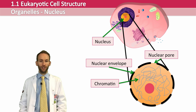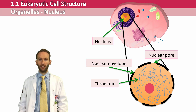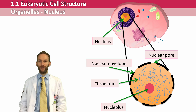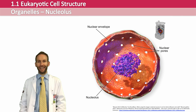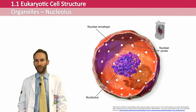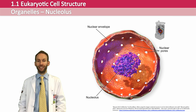The nucleus also contains something called the nucleolus — a dense, dark area within the nucleus whose function is to produce ribosomes and RNA, both of which will be discussed later. Cells can actually have more than one nucleolus.